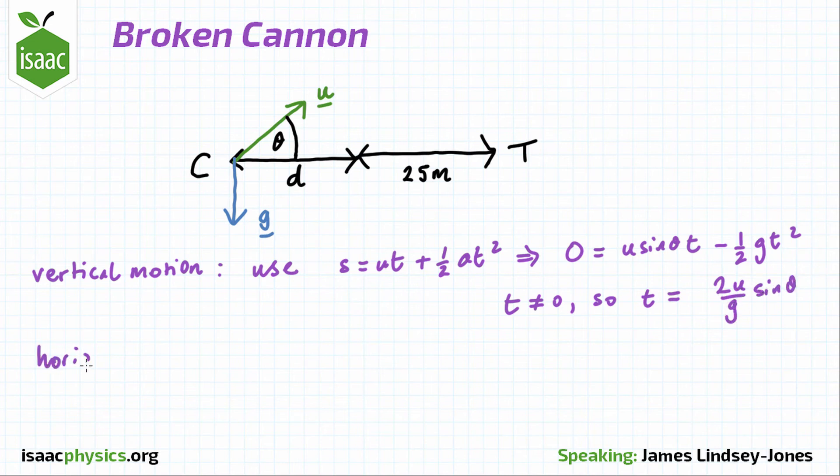We can also write down the equation of motion for the horizontal motion, remembering that in this case there is no acceleration. Now simply eliminate t from this equation to find d.